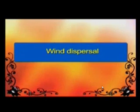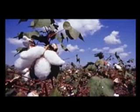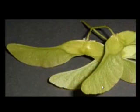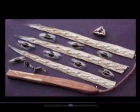Starting with the first: wind dispersal. Seeds dispersed by wind are very small in size and light in weight, like cotton seeds. They have hairs or wings that help them to fly away from the parent plant, and then they grow at that new place. We have a few pictures to show this.